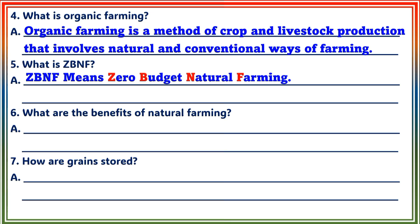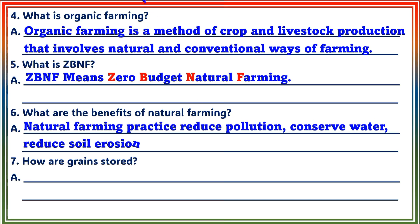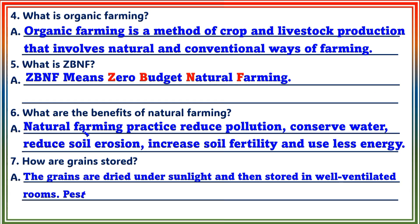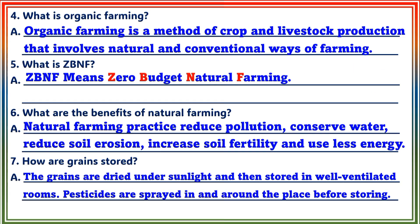Question 6: What are the benefits of natural farming? Answer: Natural farming practices reduce pollution, conserve water, reduce soil erosion, increase soil fertility, and use less energy. Question 7: How are grains stored? Answer: The grains are dried under sunlight and then stored in well-ventilated rooms. Pesticides are sprayed in and around the place before storing.